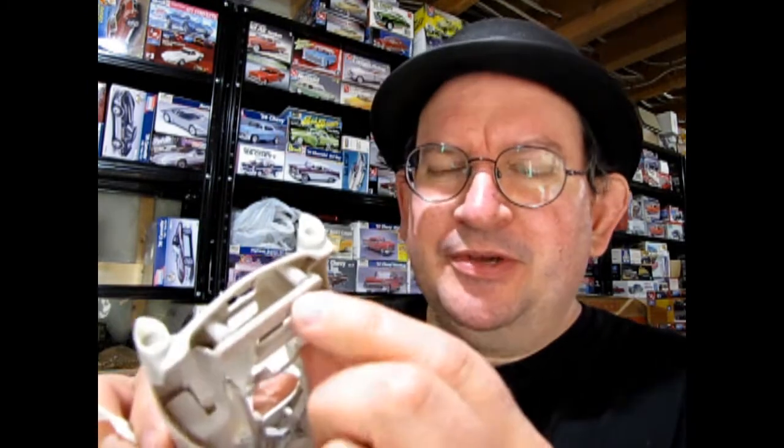I'm wondering if AMT, when they redid the front end, because this used to screw together and that's why you've got the holes underneath, maybe they made this too thick. The other thing I noticed is there's a lot of flash on the underbody.